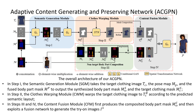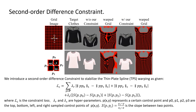Here we show the overall pipeline of the adaptive content generating and preserving network. We introduce a second-order difference constraint on a clothing warping network.